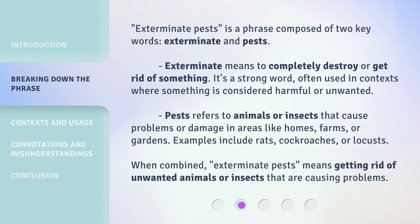Pests refers to animals or insects that cause problems or damage in areas like homes, farms, or gardens. Examples include rats, cockroaches, or locusts. When combined, exterminate pests means getting rid of unwanted animals or insects that are causing problems.